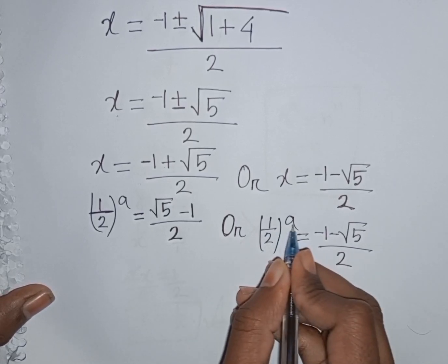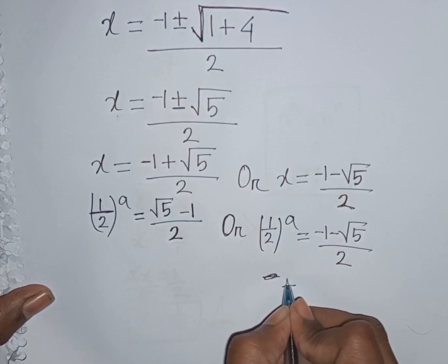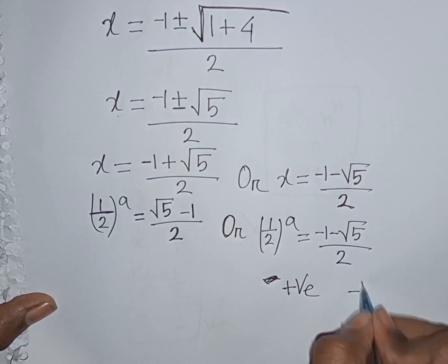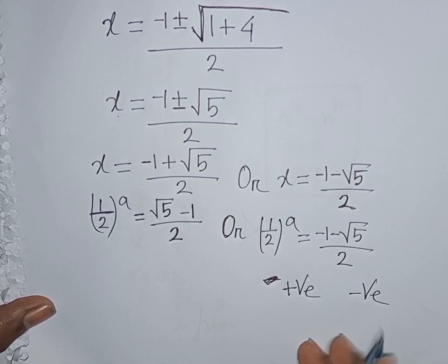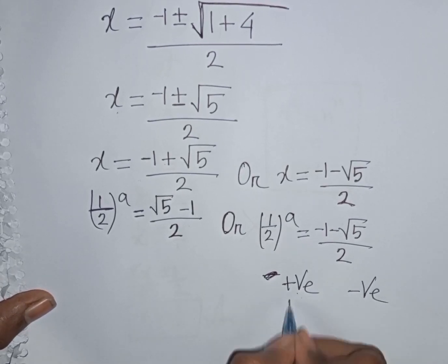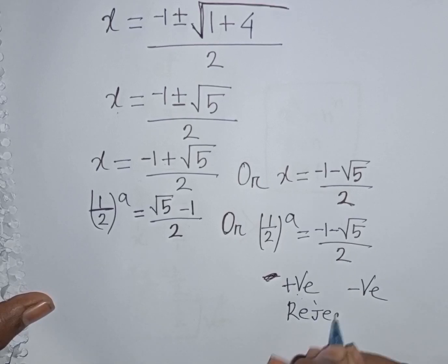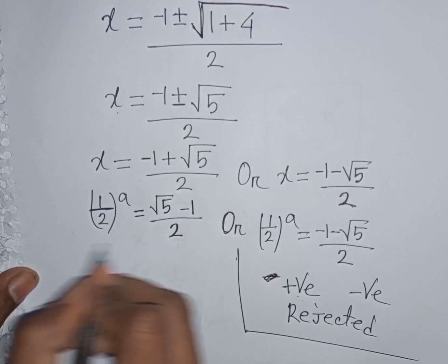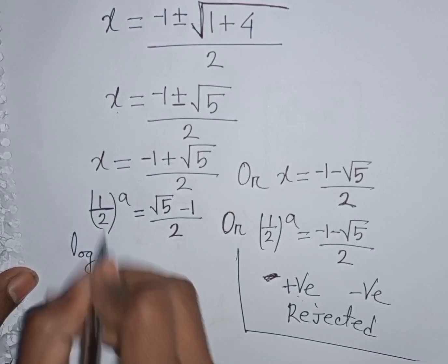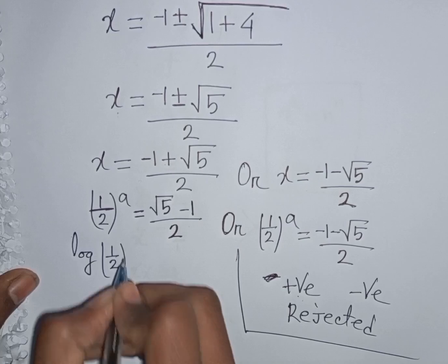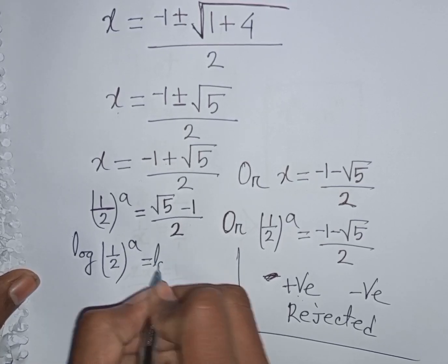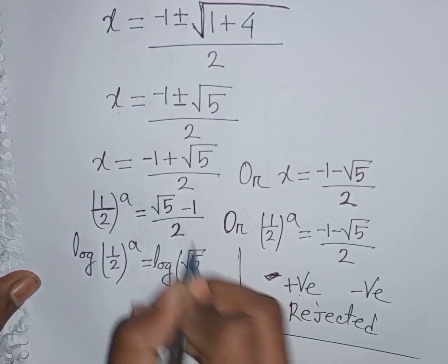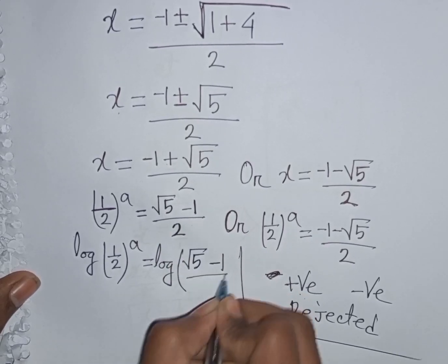We see that (1/2)^(any number) is always positive, but (-1 - √5)/2 is negative. Since positive cannot equal negative, this case is rejected. So x = (1/2)^a = (√5 - 1)/2. Now we apply log to both sides: log of (1/2)^a equals log of (√5 - 1)/2.